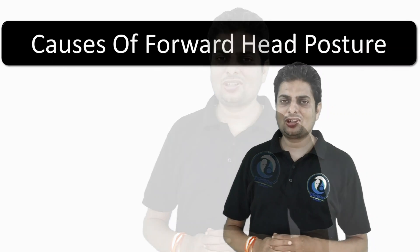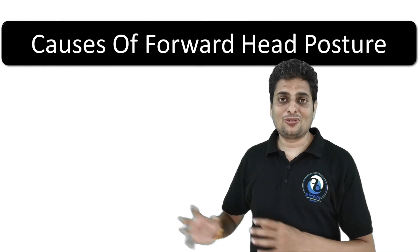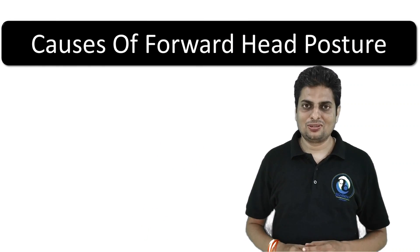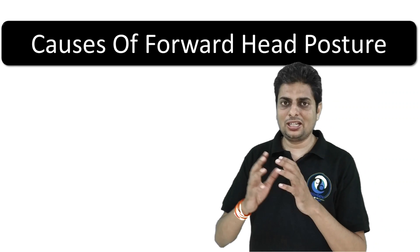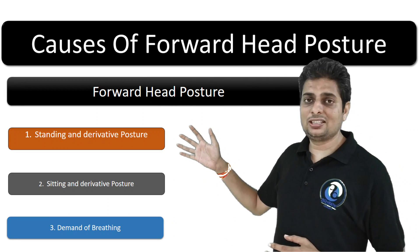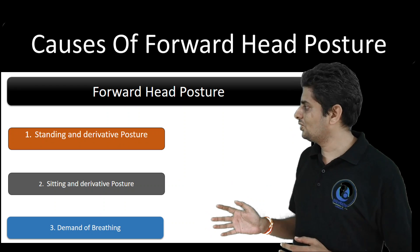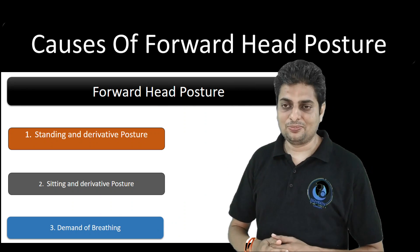That was a discussion explaining the relationship between balance strategy and forward head posture. Now let's classify the causes of forward head posture into three categories: standing and derivative postures, sitting and derivative postures, and the demand of breathing.